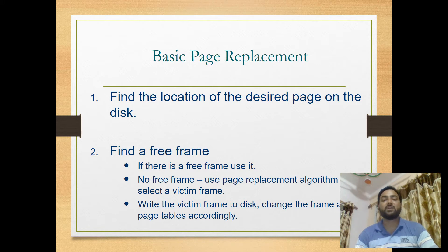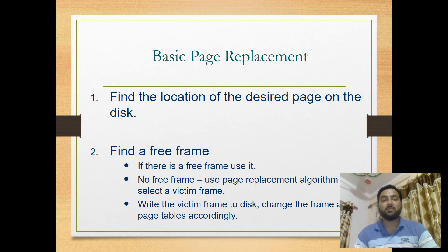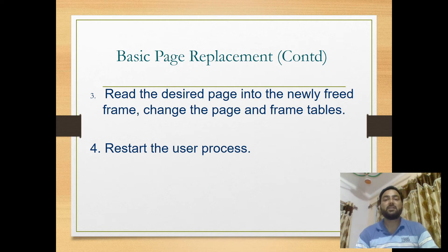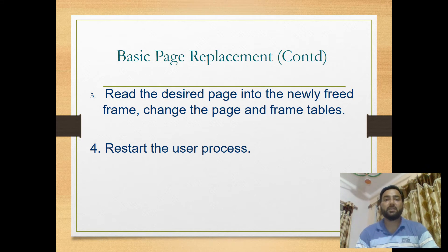We write the victim frame to disk, mark that frame as free, then read the desired page from secondary storage into the newly freed frame. We update the page tables accordingly, and once the desired page is in main memory, we restart and continue the execution of the user process.